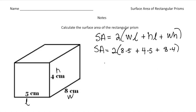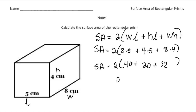Now we simplify, following the order of operations. I have parentheses with multiplication inside, so I'll simplify what's inside first. Eight times five is 40, four times five is 20, and eight times four is 32. So surface area equals two times the quantity of (40 plus 20 plus 32). Adding inside the parentheses: 40 plus 20 is 60, and 60 plus 32 is 92. So the surface area is two times 92, which is 184. Because we're talking about area, our label is centimeters squared.